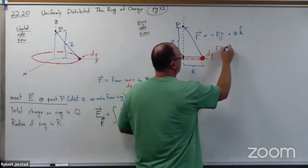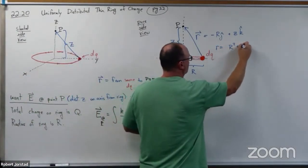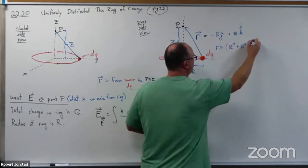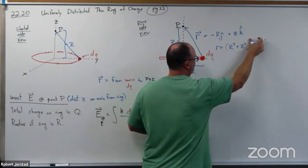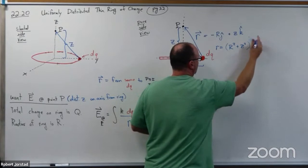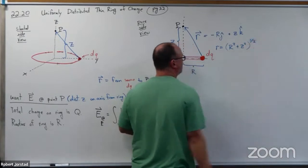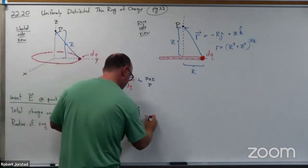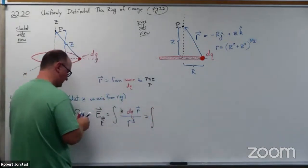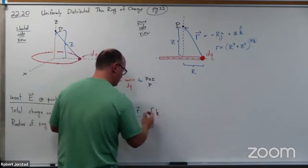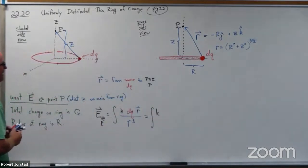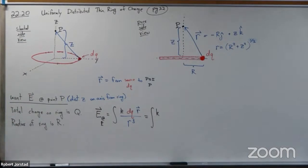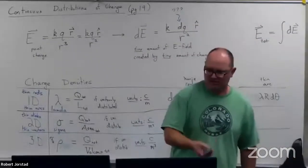At this point it's pretty straightforward. The magnitude of r would equal the square root of R-squared plus z-squared — or to the one-half. Now when I plug this in, I get k·dQ... but wait, we haven't figured out what dQ is. We need to use density to write that, so let's go back to our density.